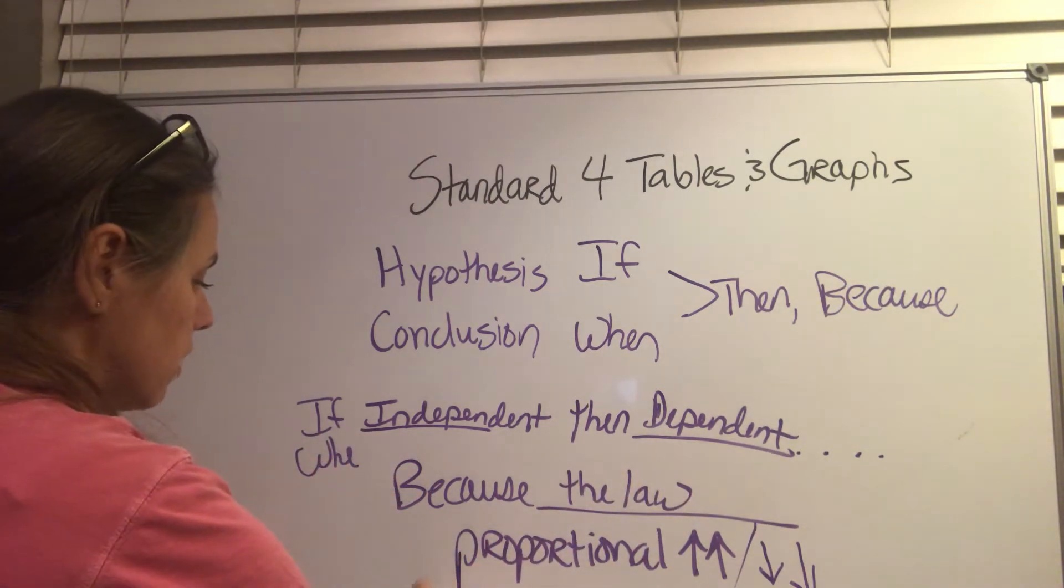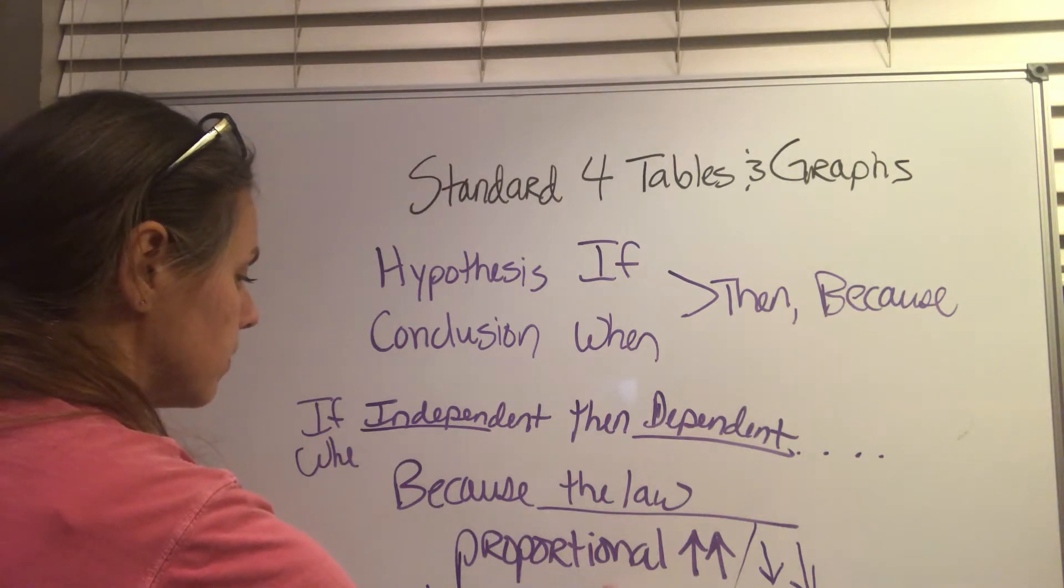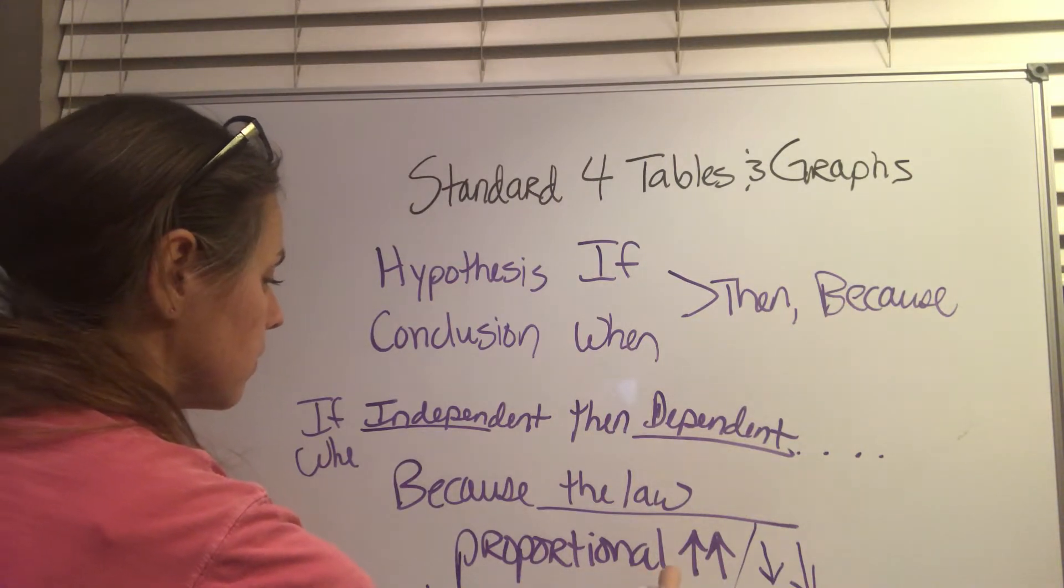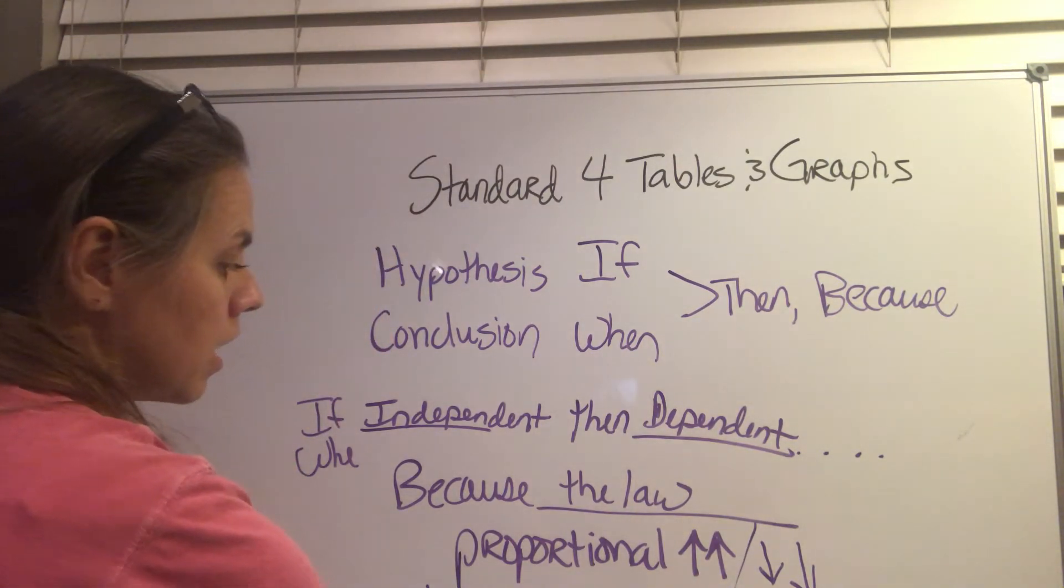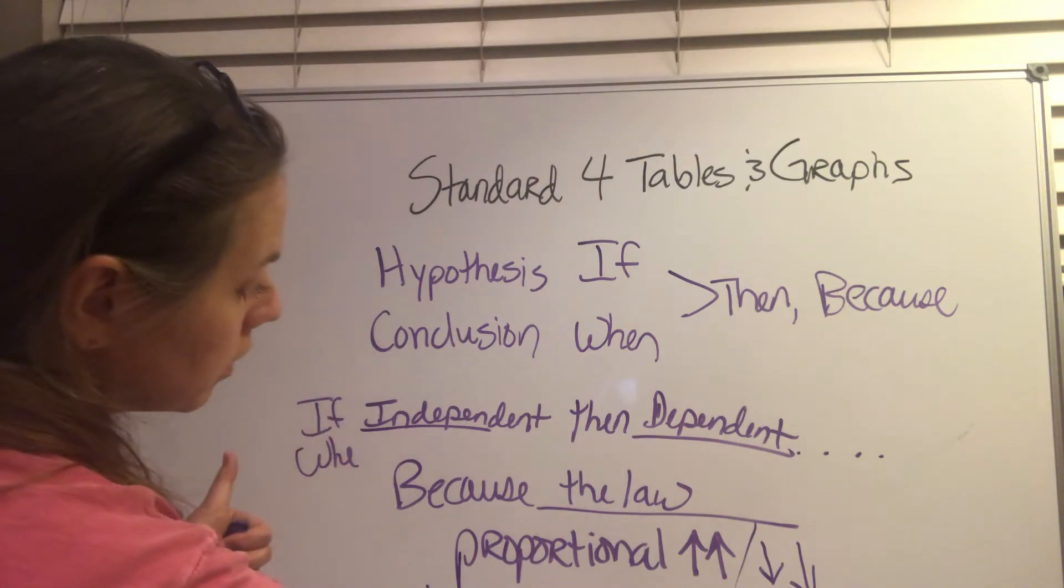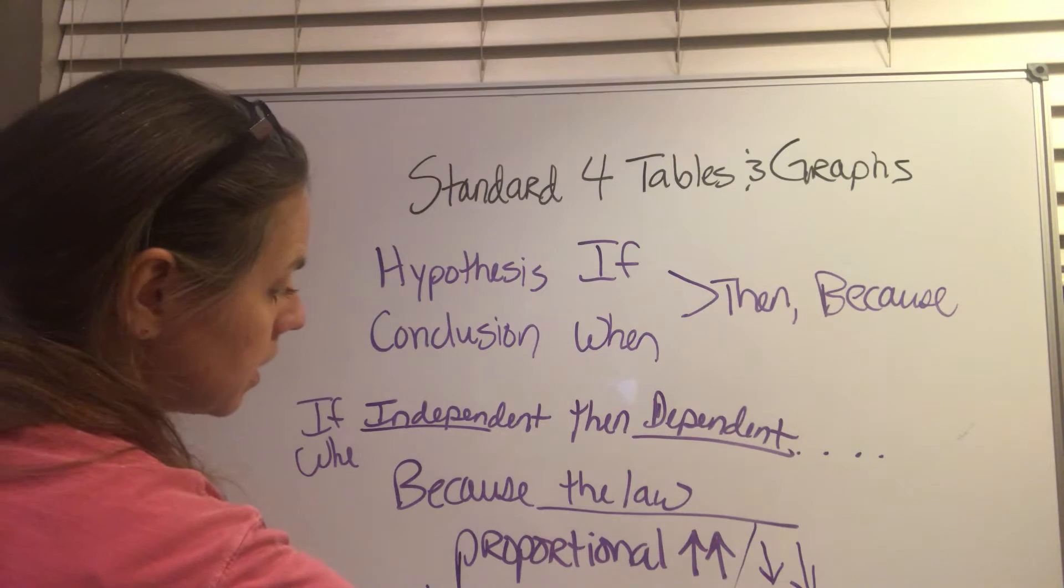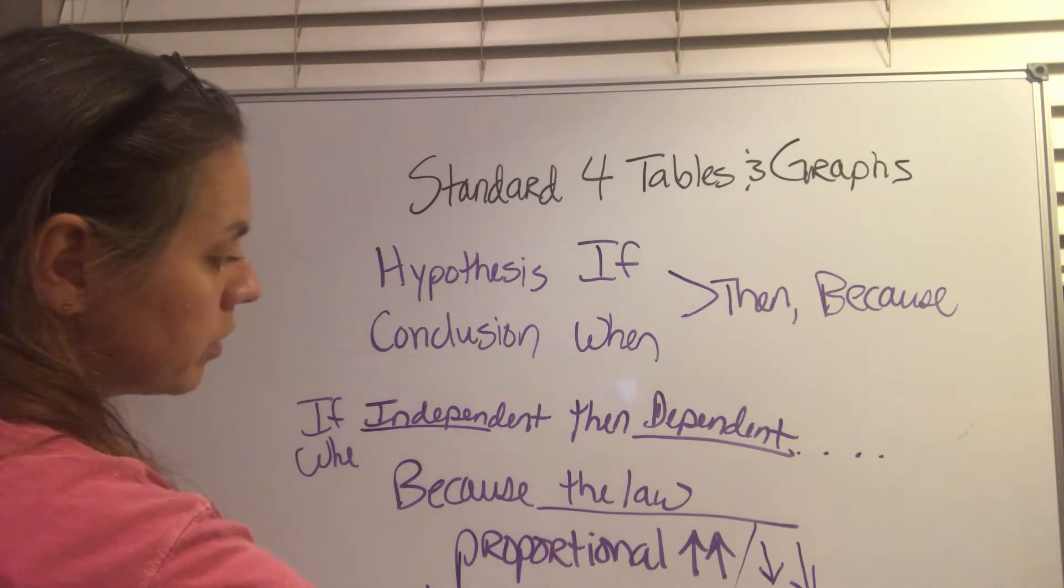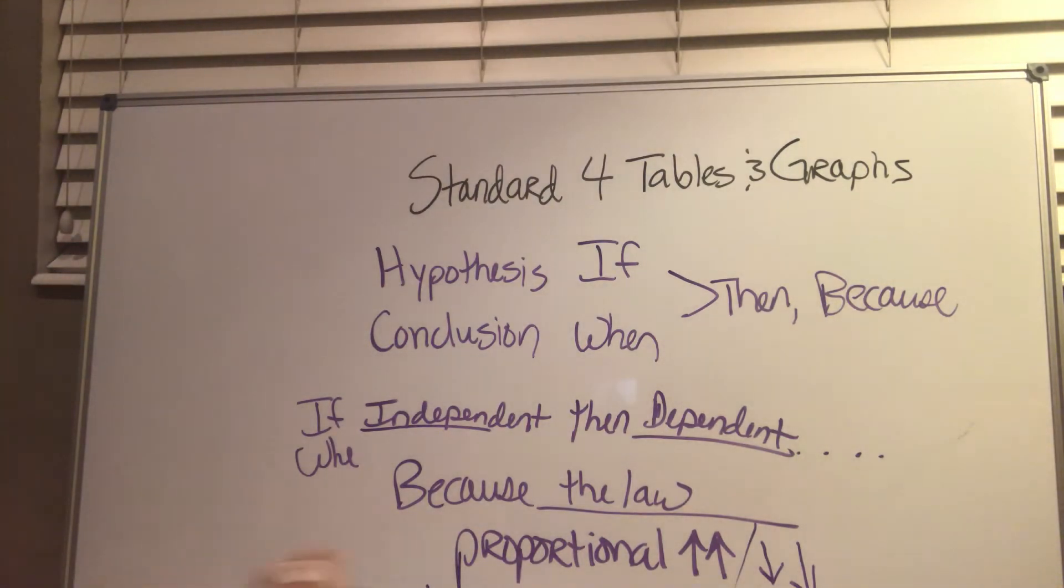Or inversely proportional. And that just means arrow up. As the independent variable increases, the dependent variable decreases. Or the opposite. As the independent variable decreases, the independent variable increases. So that's the law, whether it's a proportional law or inversely proportional.